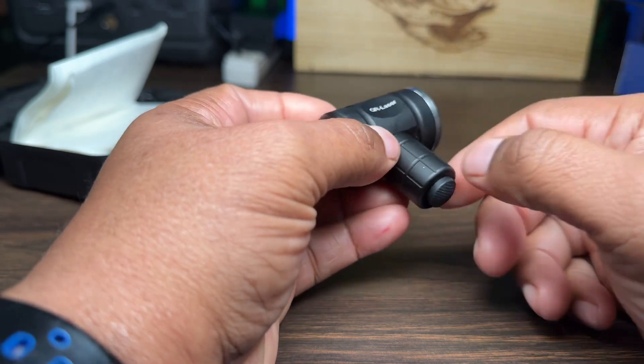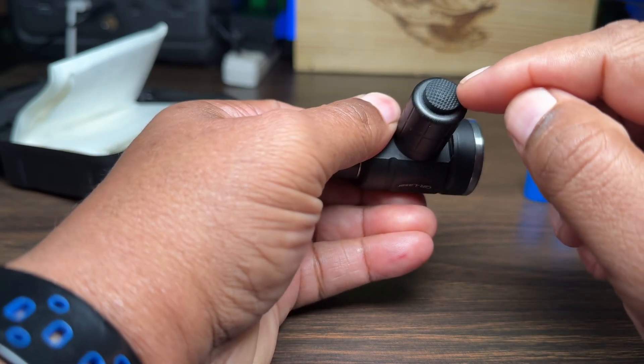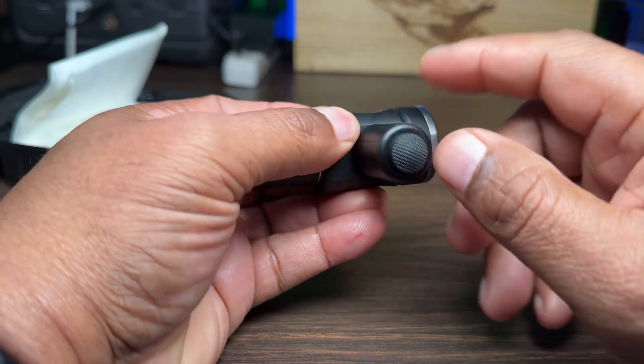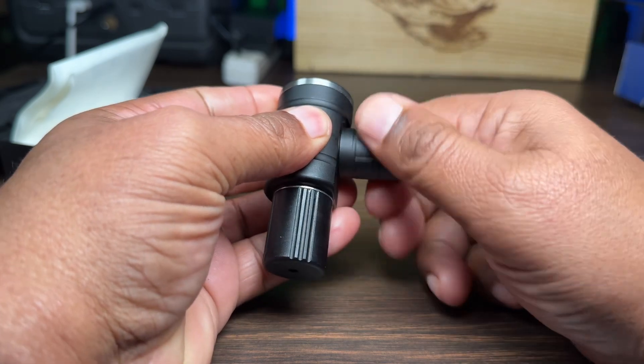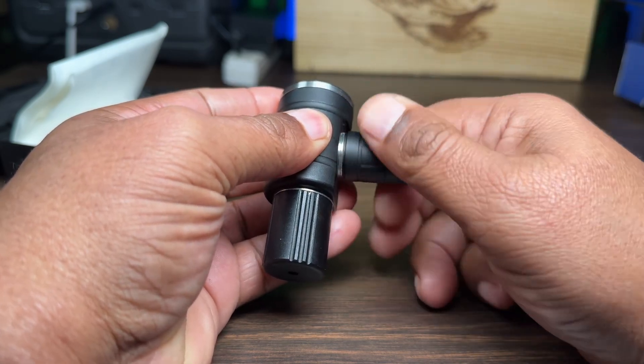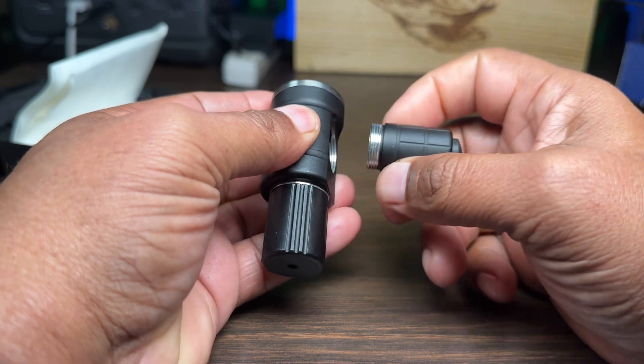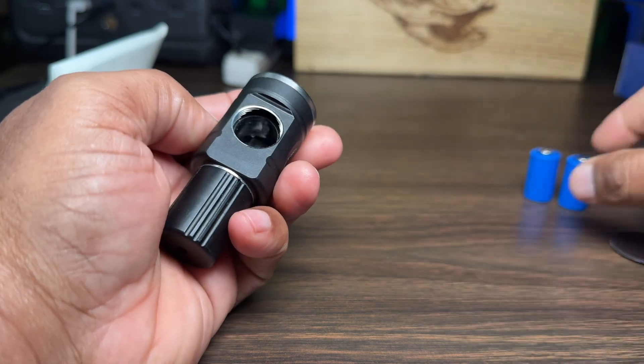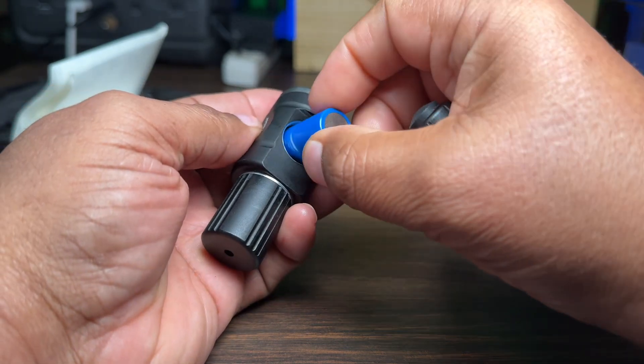Alright, let's take a closer look at the bore sighter. This one only has one button to turn it on, which is right here at the bottom. Let's first make sure we have a battery inside. There's no battery, so we're going to go ahead and place a battery inside.